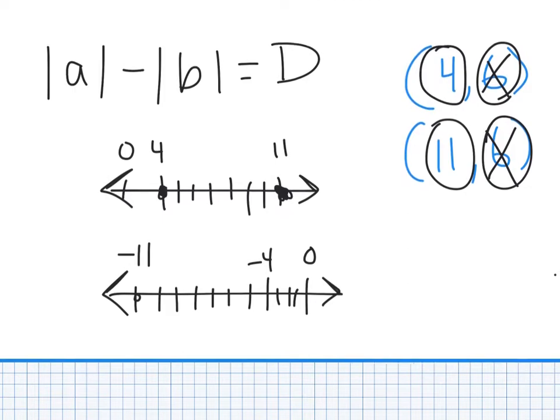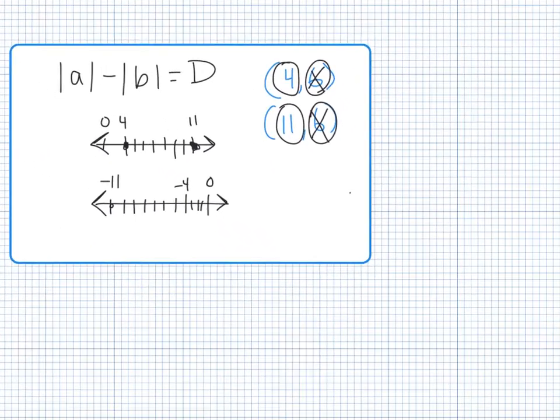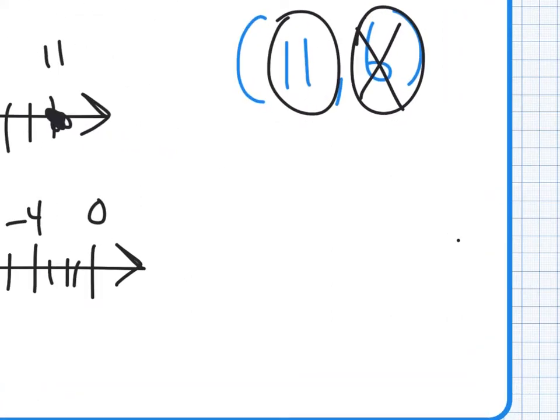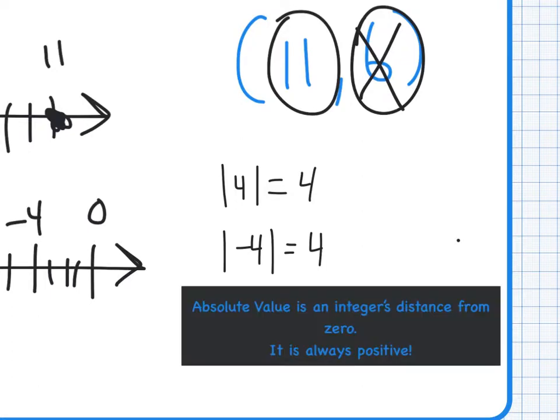So absolute value, as we have seen many times before, is if I have the absolute value of any number, let's say the absolute value of 4, is going to be 4. Because the question is, how many units from zero is 4? That's what absolute value says. The absolute value of 4 is 4. So what is the distance from zero of 4? Well, it's 4. What's the absolute value of negative 4? 4. That's right, it's 4 as well. Because how many units from zero is negative 4? 4 units. So absolute value simply means, what is its distance from zero? Absolute value is an integer's distance from zero, and therefore it is always positive.